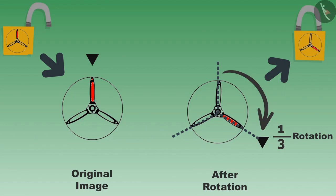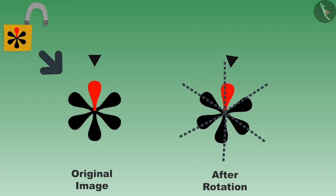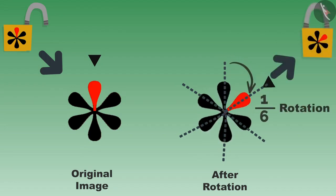'Yes, Tenali Rama, now I can see that it has rotated once. I understood your trick. It means that the other lock which opens after one-sixth rotation looks like this, and after closing it will look like this. I am proud of your wisdom, Tenali Rama.'